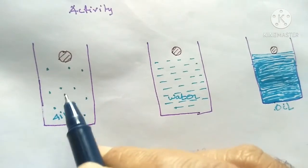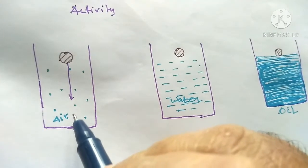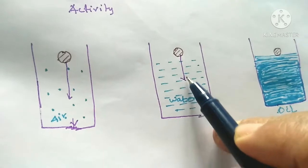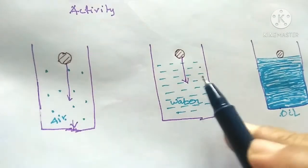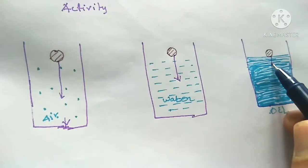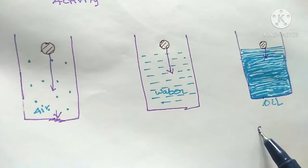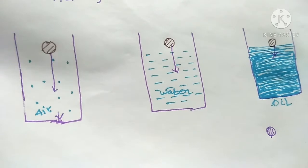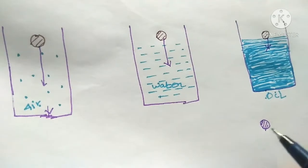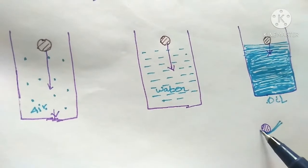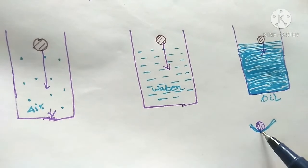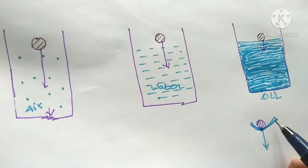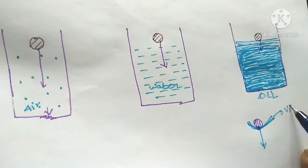The steel ball moves easily in air. When it drops in water, the movement is not as easy as it is in air. In oil, it drags the oil layers. There is a strong upward force. So there is opposition between various layers due to viscosity.